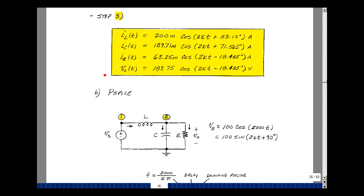What we're going to take a look at in this video is what does it mean to be in steady state. In this example, we had 100 cosine of 2000t.